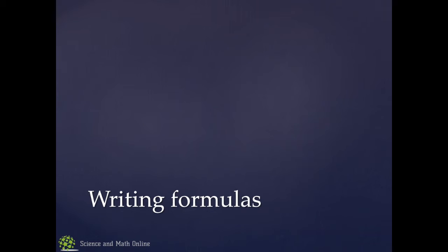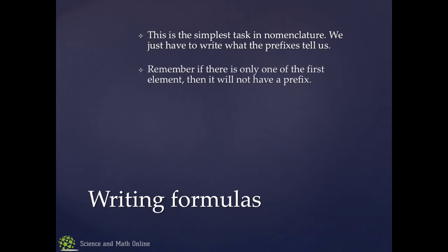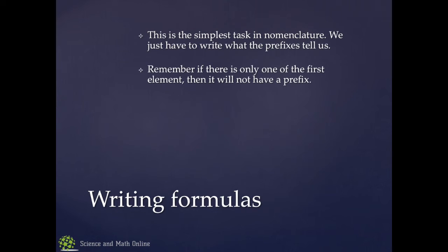Writing formulas, these are, once again, relatively simple. This is probably the simplest thing you have to do. You just simply do what the prefixes tell you to do. Looking at three examples, nitrogen trihydride. How many nitrogens? Well, there's no prefix, so there just must be one. How many hydrogens? Three. Otherwise known as ammonia. That's its common name.